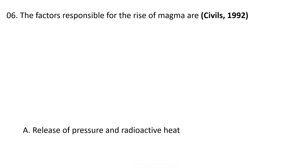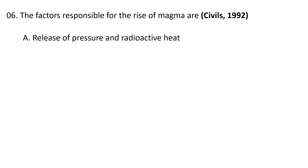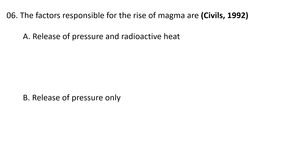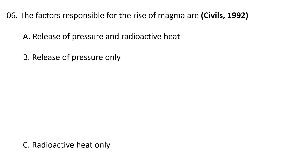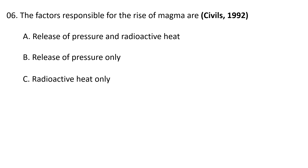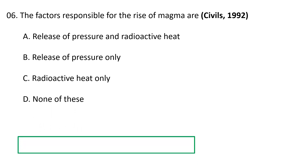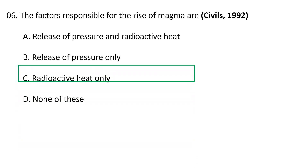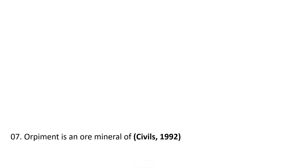Next question: What are the factors responsible for the rise of magma? Choices are A. Release of pressure and radioactive heat, B. Release of pressure only, C. Radioactive heat only, D. None of these. The correct answer is A — it is the release of pressure and radioactive heat.